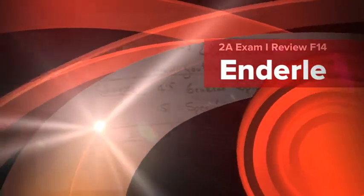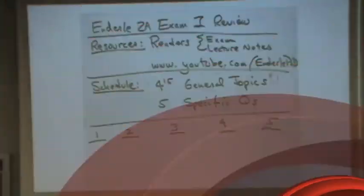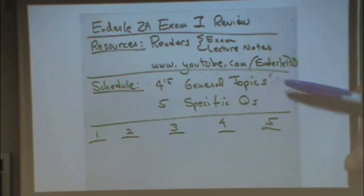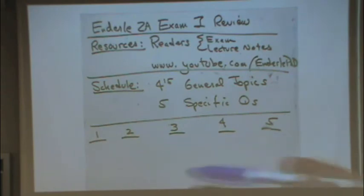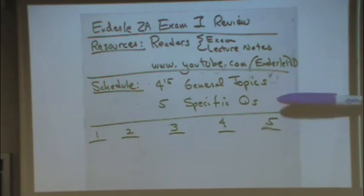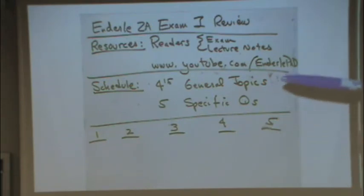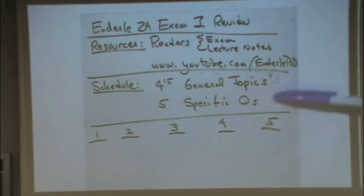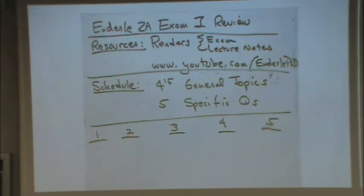We might as well get started. This is our Exam 1 review. Since you're in 2A and haven't been to one of my reviews before, here's how it will work. We're going to do some general topics first. I'll ask you in a moment if you want me to cover something, I'll list it under the chapter, and we'll get through as many as we can. Then around 5 or so we'll get to specific questions.